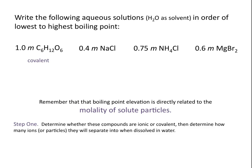Glucose is a covalent compound, and because glucose molecules don't ionize in water, 1 molal C₆H₁₂O₆ equals 1 molal particles. NaCl is an ionic compound, and because it ionizes in water, 0.4 molal NaCl gives 0.4 molal sodium ions and 0.4 molal chlorine ions, for a total of 0.8 molal particles.